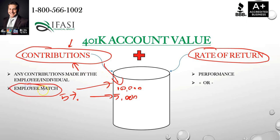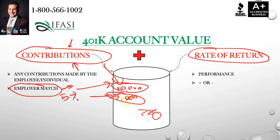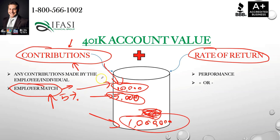The employer match is correlated to the contribution amount you place in there — it doesn't matter how much money is already sitting in the 401k account. Whether the account is at $0 or at $1,000,000, if you made $100,000 and put in $10,000 with a 5% match, the match would still only be $5,000. The employer match is not determined by how much account value is sitting in the bucket.